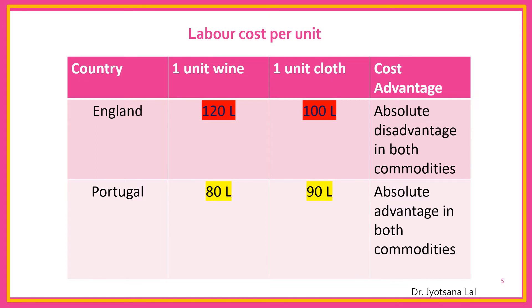If we see carefully, England has absolute disadvantage in producing both the commodities, because for both commodities England requires more number of labor as compared to Portugal. So Portugal has absolute advantage in producing both commodities, because comparatively less labor is required to produce both commodities in Portugal.